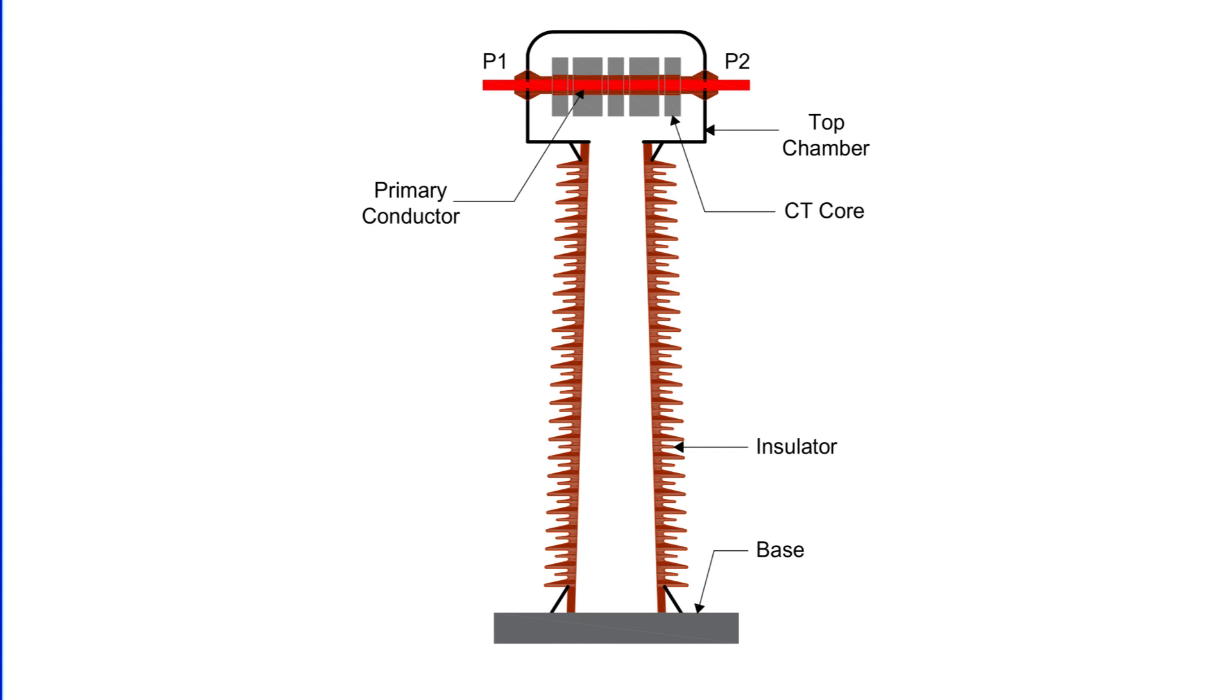This housing is at line potential, not grounded like the dead tank, and the current path is much shorter and more direct. Because of this simpler internal path, there's less insulation stress, less thermal build-up, and less risk of catastrophic failure. Even if something does go wrong, the effects are usually confined and manageable.